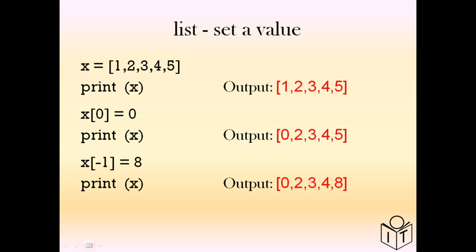We can also access the list using an index from the back of the list using negative numbers. Minus 1 signifies the last value. So in this example we change the value 5 to 8, and we end up with [0, 2, 3, 4, 8].